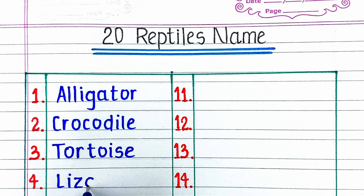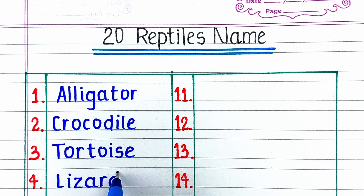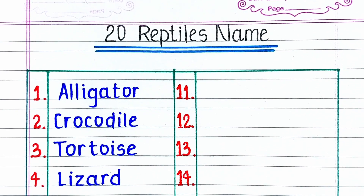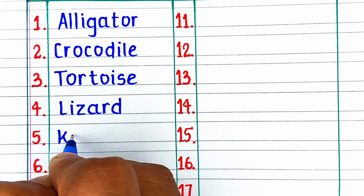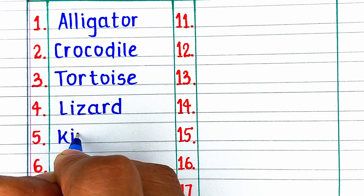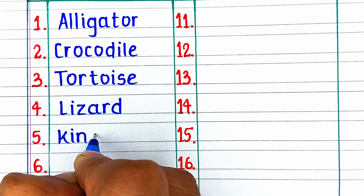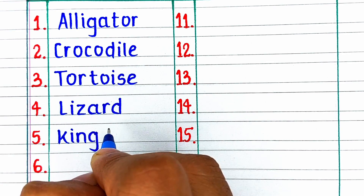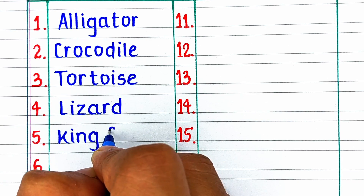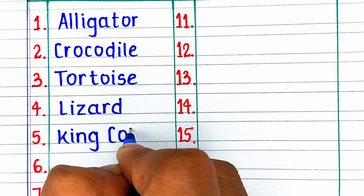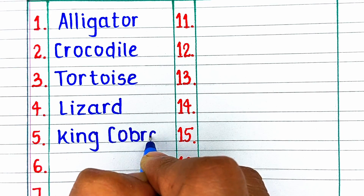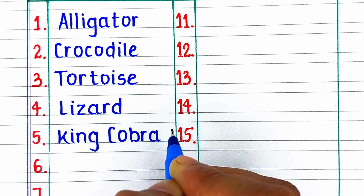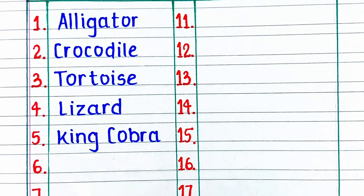Next reptile in our list is L-I-Z-A-R-D, lizard. Next is K-I-N-G C-O-B-R-A, king cobra.